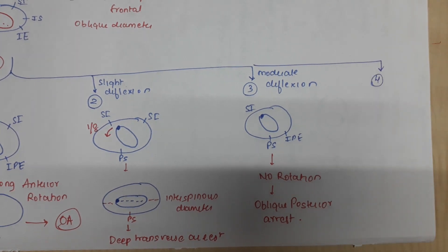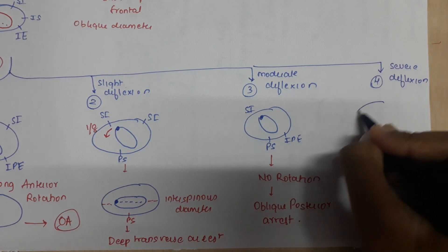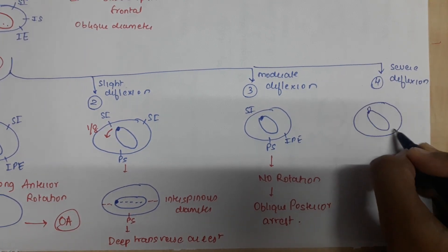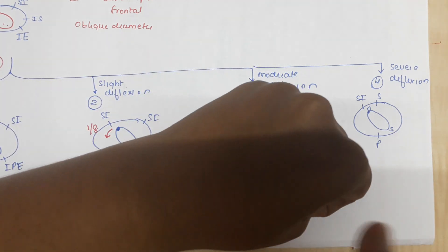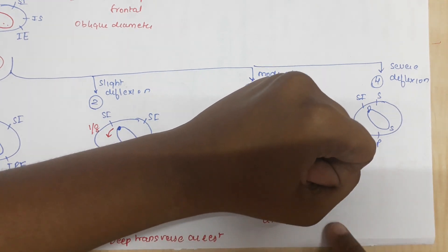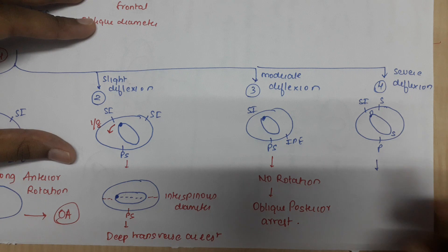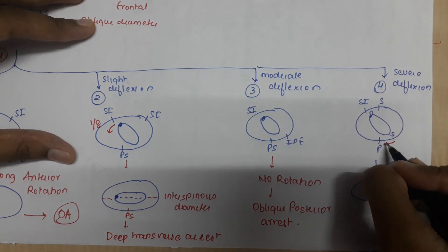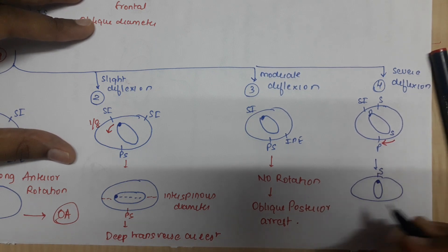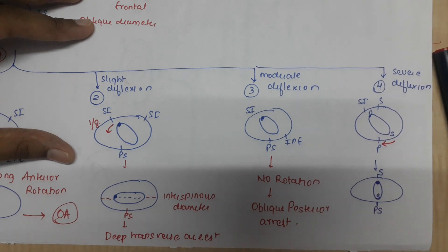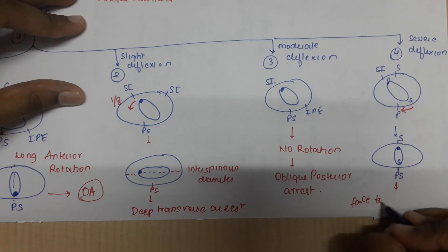The fourth possibility: if there is severe deflection, the occiput will not hit the pelvic floor first. The sinciput is at a lower level and will hit the pelvic floor first. As the principle goes, whichever hits the pelvic floor first has to turn to lie behind the pubic symphysis. So the sinciput rotates in that direction, resulting in the occiput lying with respect to the sacrum and the sinciput lying with respect to the pubic symphysis. This delivers by the face-to-pubis mechanism.